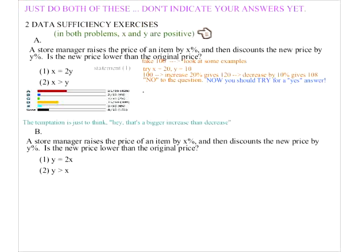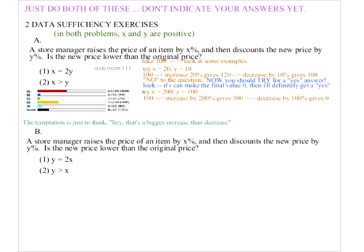Daniel's idea is excellent: try a 100% decrease at the end to make the final value zero. Let's try X = 200% and Y = 100%. Start with 100, increase by 200% gives 300, then decrease by 100% gives zero. That's a 'yes' to the question. So with X = 20, Y = 10 we get 'no,' and with X = 200, Y = 100 we get 'yes.' That means statement one is insufficient. It turns out that if Y is anything bigger than 50%, it will work out to be a 'yes.'